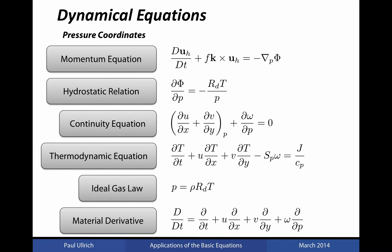Recall that the dynamical equations in pressure coordinates are given by six equations. We have a momentum equation describing the evolution of the horizontal velocity, a hydrostatic relationship which describes the vertical structure of the atmosphere, a continuity equation which describes conservation of mass, a thermodynamic equation which describes conservation of energy, the ideal gas law which relates the three thermodynamic quantities, and the material derivative which describes the Lagrangian reference frame in terms of the Eulerian reference frame.